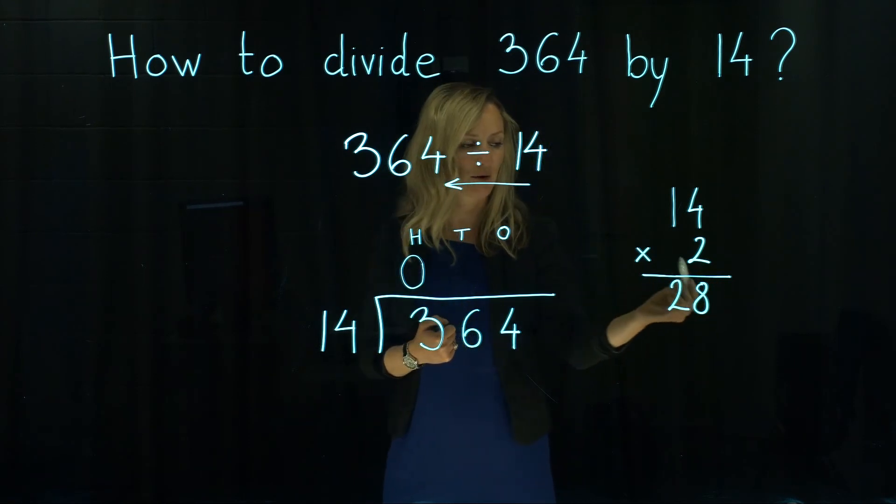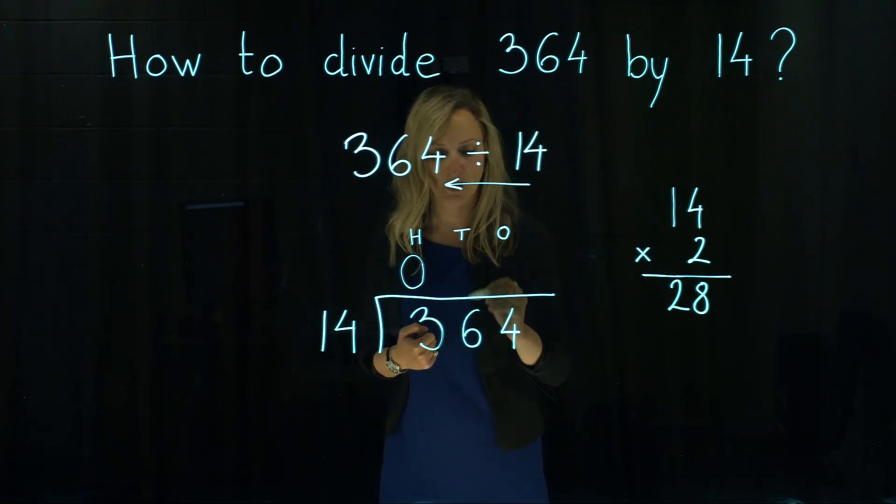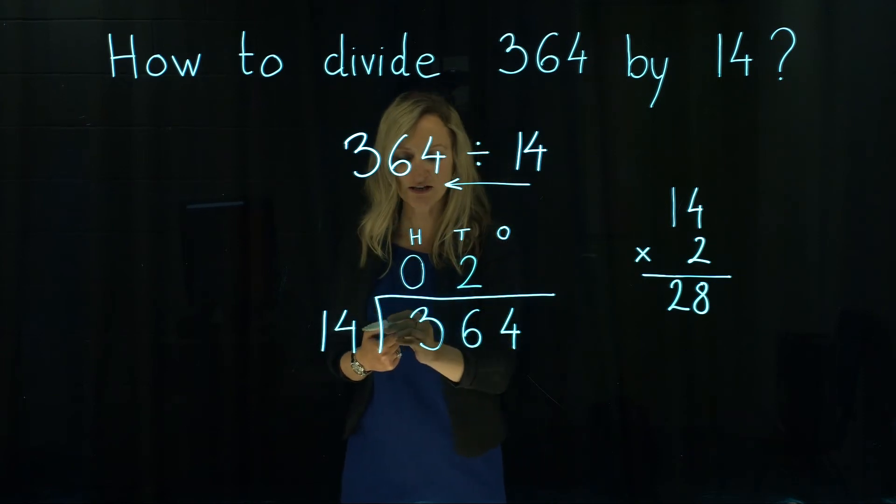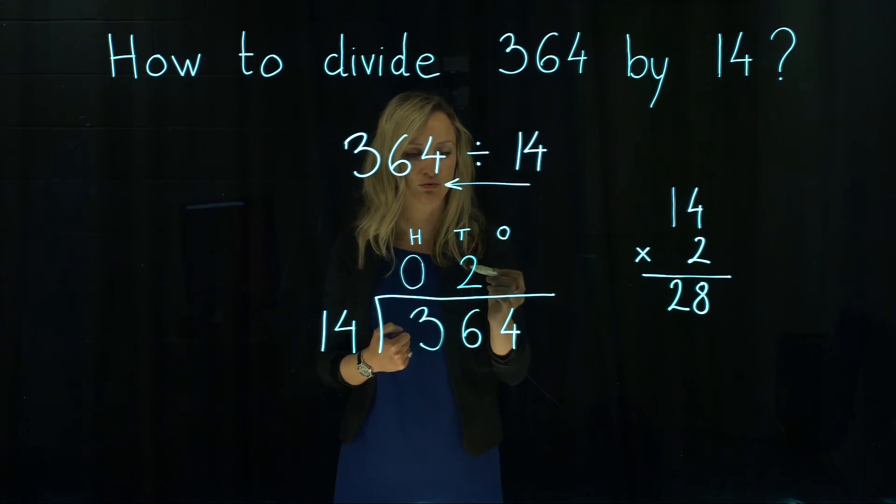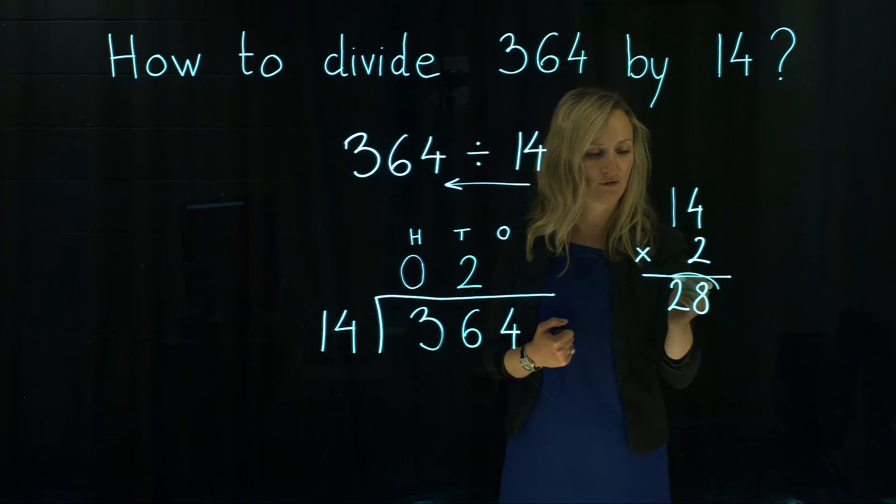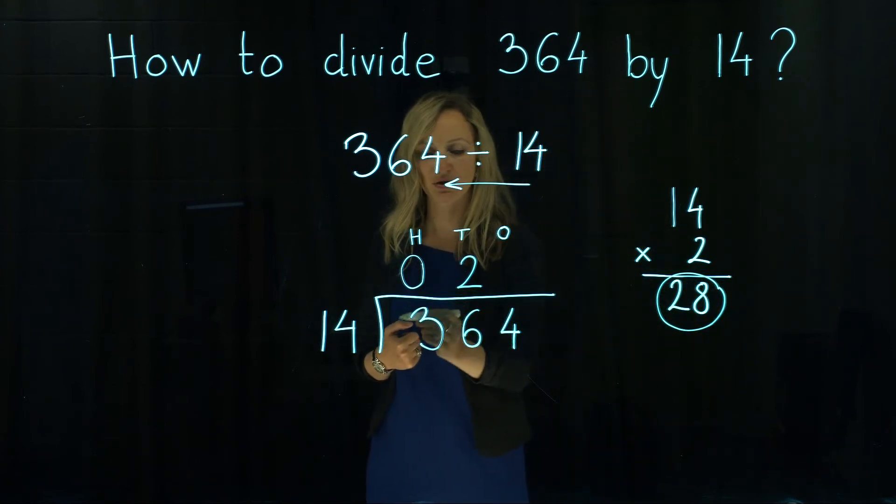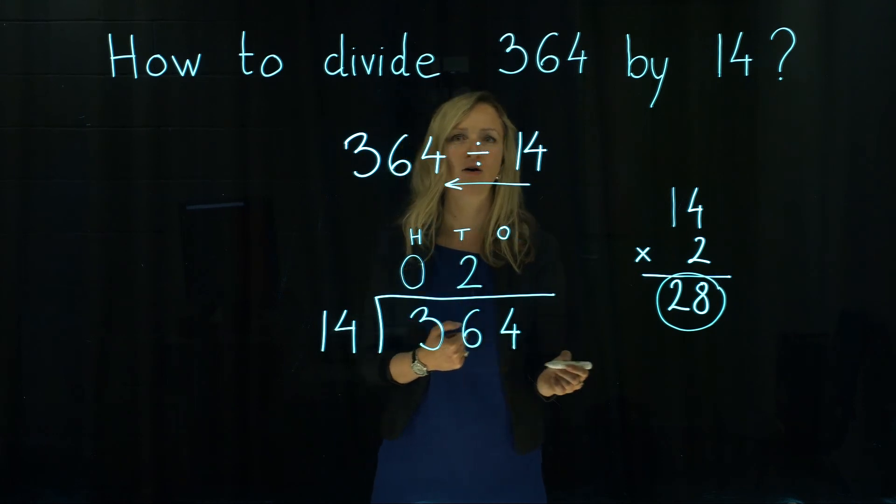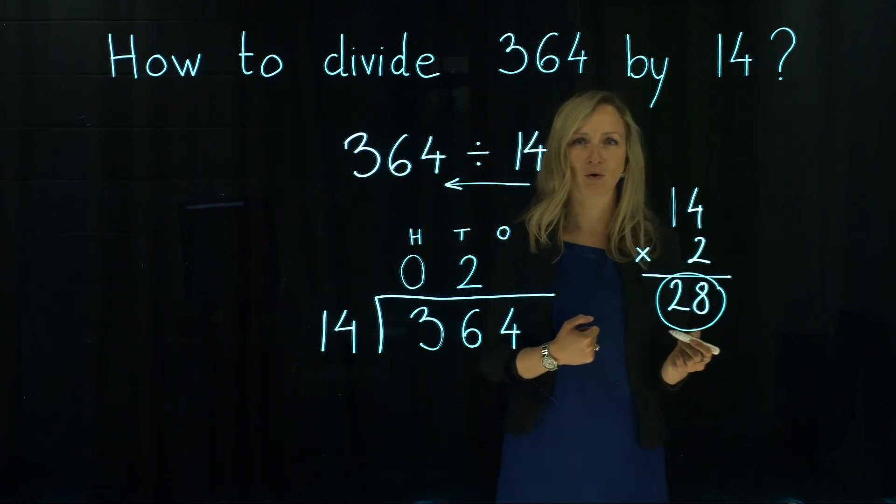So that means we write the number 2 on top of number 6. 14 goes in 36 twice. But we've got the remainder. So from 28 to get to 36, how many more we need?